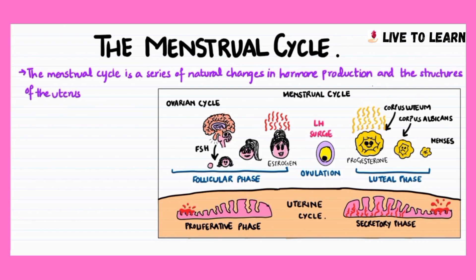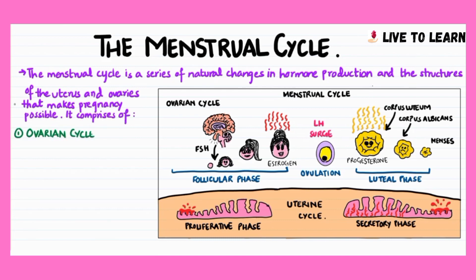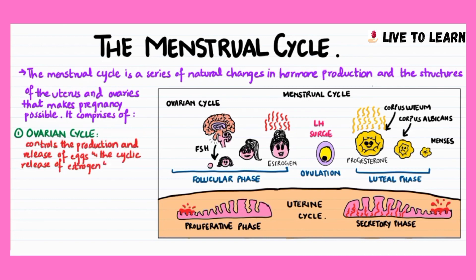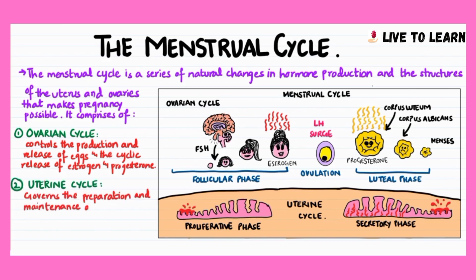The menstrual cycle is a series of natural changes in hormone production and the structures of the uterus and ovaries that make conception possible. It comprises of the ovarian cycle, which controls the production and release of eggs as well as the cyclic release of estrogen and progesterone, and the uterine cycle, which governs the preparation and maintenance of the lining of the uterus to receive an embryo.